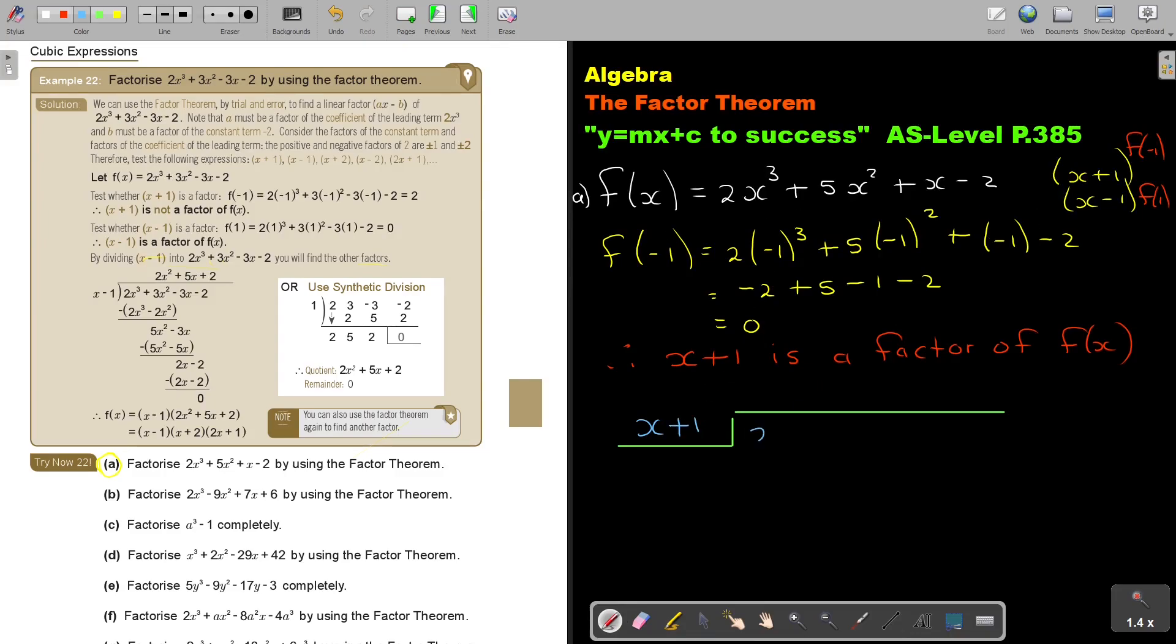x plus 1. And then my, this one, 2x cubed plus 5x squared plus x minus 2. And then, if I divide, I get 2x squared. And then I multiply, so I get 2x cubed. And I multiply, and I get 2x squared.